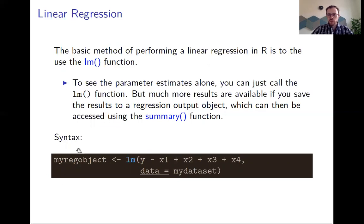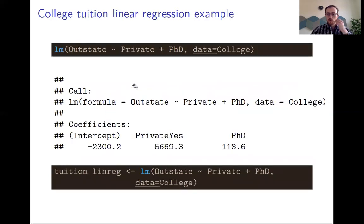You then save this as an object which contains all the output from the regression. Let's look at an example. We use the college data set that we have used earlier in this class and we would like to explain the tuition cost by specifying a simple model that includes whether the college is a private or public college and what is the share of faculty that has a PhD.